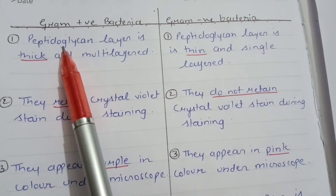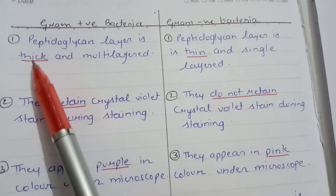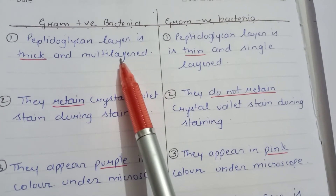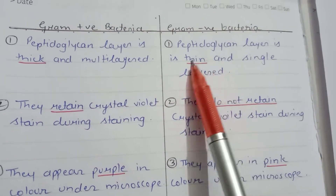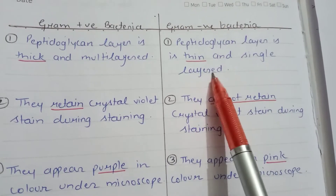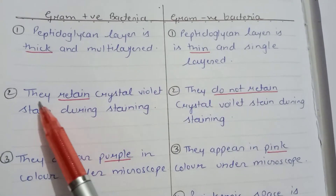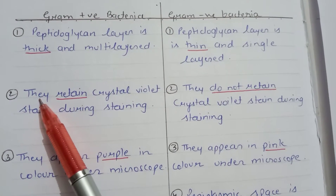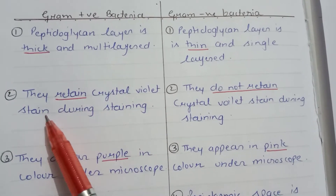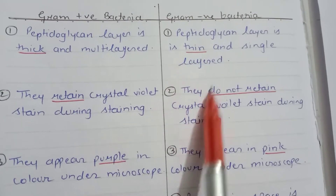First of all, in gram positive bacteria the peptidoglycan layer is thick and multi-layered, but in gram negative bacteria this layer is thin and single layered. Gram positive bacteria retain the crystal violet stain during staining, but gram negative bacteria do not retain this crystal violet stain.